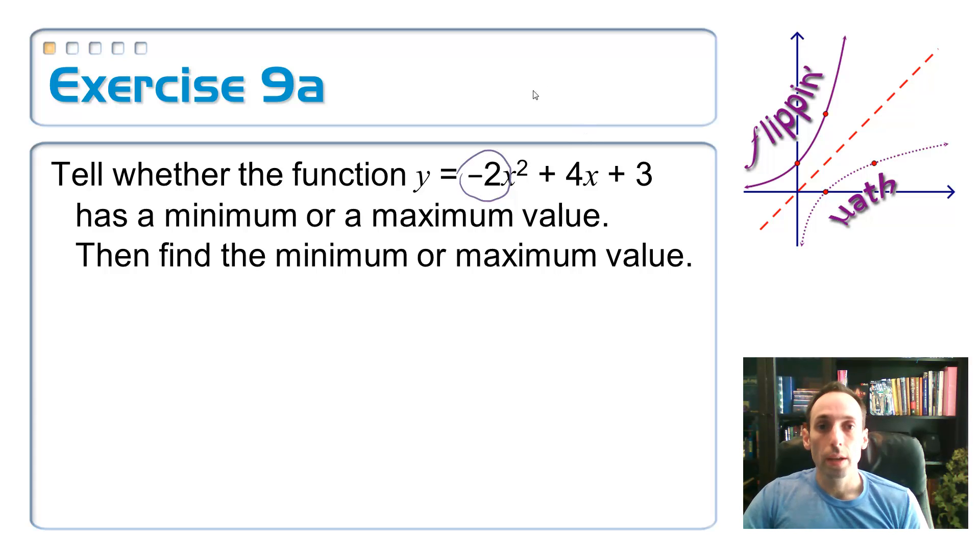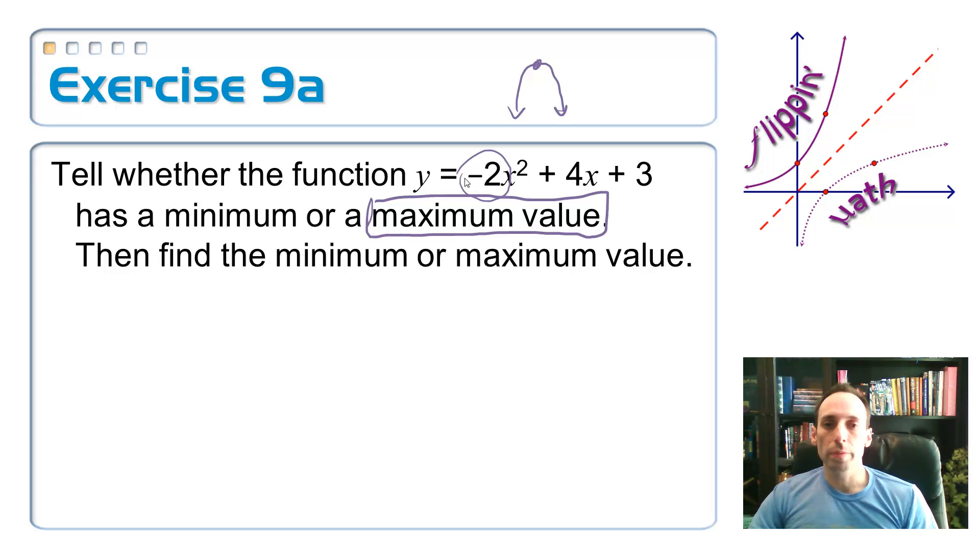what does that mean? That means we're going to have ourselves a parabola like so, and it's a Fu Manchu mustache upside down, so I've got myself a maximum value. And then I have to find the maximum value. The way that I find the maximum value,